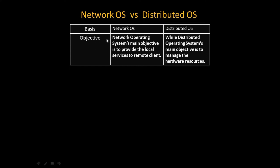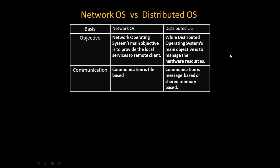Starting with objective: in a network operating system the main objective is to provide local services to remote clients, since each client has a separate node and separate CPU. In a distributed operating system, the main objective is to manage the hardware resource, because all clients share the same hardware resource.